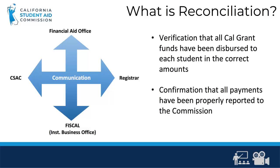Think of it this way. The Commission provides funding to your institution's fiscal office as well as reports for that funding, so that your fiscal office can successfully track and monitor all Cal Grant funds. The Commission also provides the Financial Aid Office with various reports and rosters used for reporting disbursement information to the Commission. Your institution's Registrar, Financial Aid Office, and Fiscal Office may all collect different documents that may be necessary to reconcile payments, so it is important for all of these offices to be sharing and making accessible the various documents needed for reconciliation with each other.